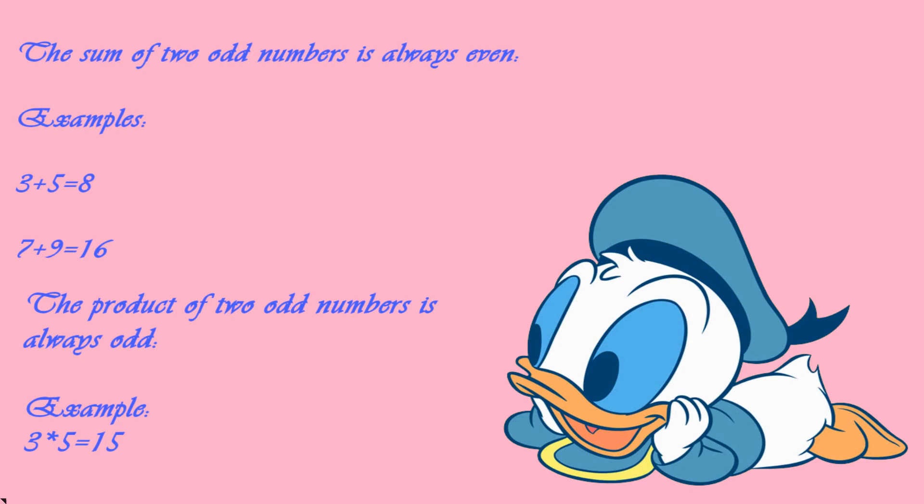Similarly, the product of two odd numbers is always odd. Example: 3 into 5 is equal to 15, which is an odd number.